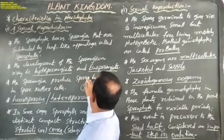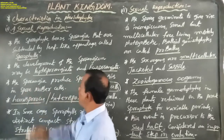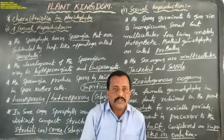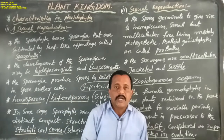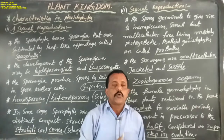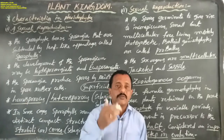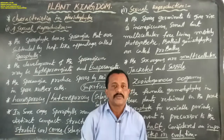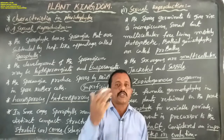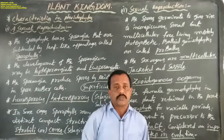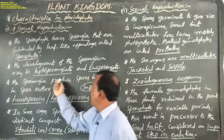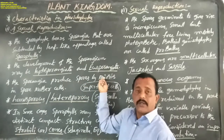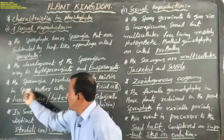The sporangia produce spores by meiosis in spore mother cells. The sporangium contains several spore mother cells. These spore mother cells undergo meiosis or reduction division to produce several spores.